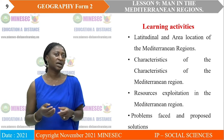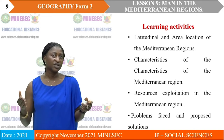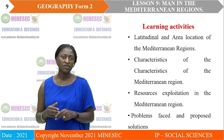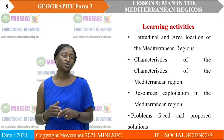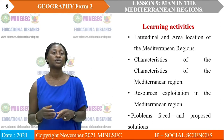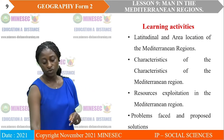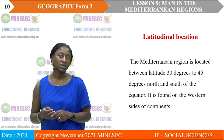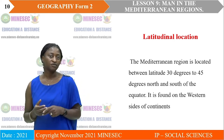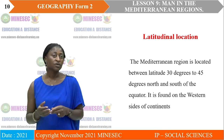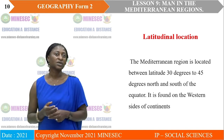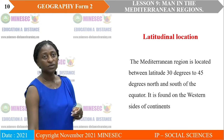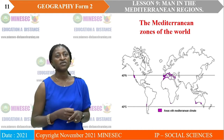Let's look at the different learning activities. We are going to look at the latitudinal location of the Mediterranean regions, the different areas found in the Mediterranean regions of the world, the characteristics of this area, the resource exploitation in this region, and the different problems faced and their proposed solutions. The Mediterranean region of the world is located between 30 degrees to 45 degrees north and south of the equator.